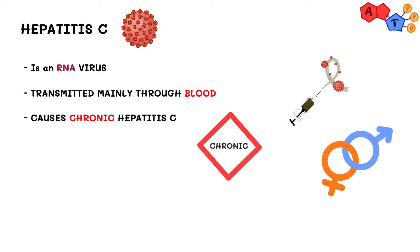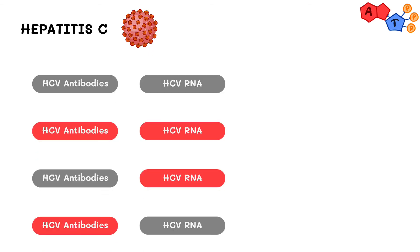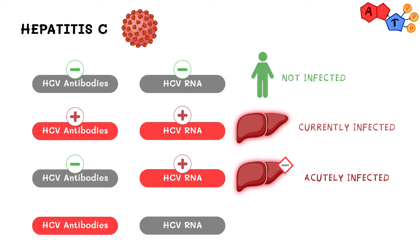Since hepatitis C causes chronic hepatitis, it can cause cancer. In terms of serology, we look at the antibody against hepatitis C and hepatitis C RNA (HCV RNA). If both are negative, the person is not infected. If both are positive, the patient is currently infected. If antibody is negative but HCV RNA is positive, the patient is acutely infected — this is very rare since HCV typically causes chronic disease. If antibody is positive but HCV RNA is negative, the patient was treated.